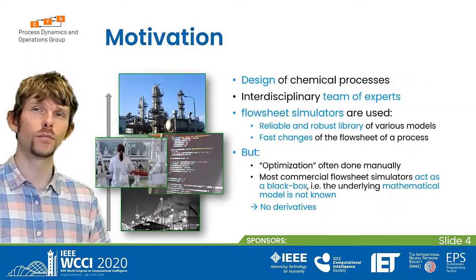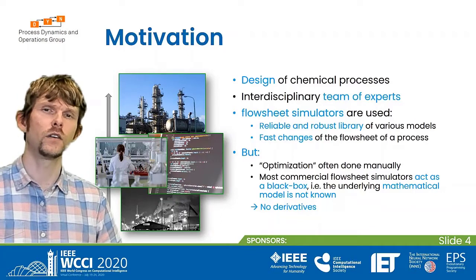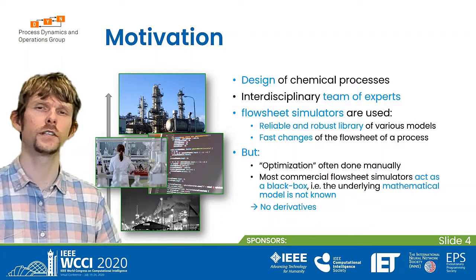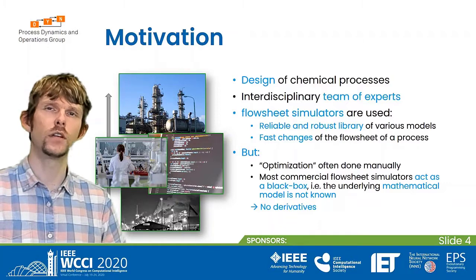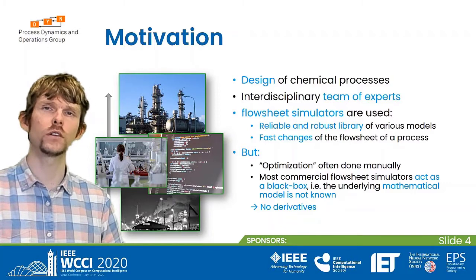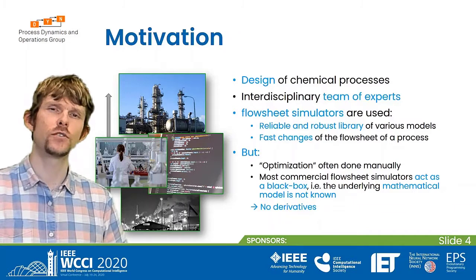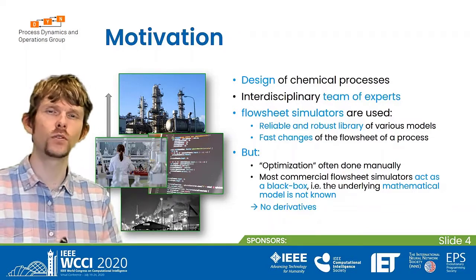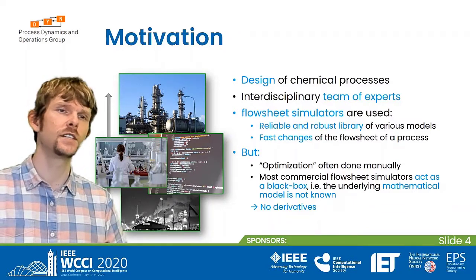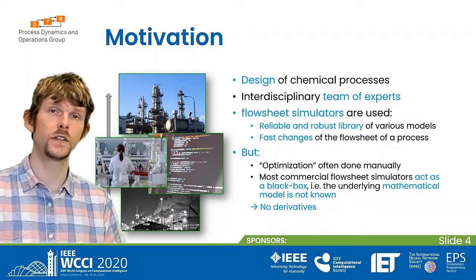The design of chemical processes is often done by interdisciplinary teams of experts, and many of those teams use flow sheet simulators because they have a reliable and robust library of models. They allow teams to change the process relatively fast and prototype things — it's much easier than coming up with your own equation system.